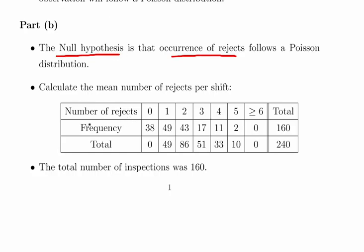Now what we have to do first is calculate the mean number of rejects per shift. First, calculate how many shifts there are altogether, and it turns out there are 160. Then find out how many rejects there were altogether in those 160 shifts, which is 240. There were 38 instances with no rejects, 49 with one reject (that's 49), 43 shifts with two rejects (that's 86), and so on.